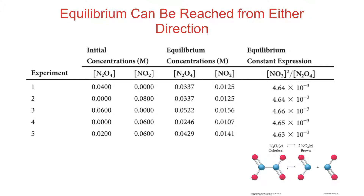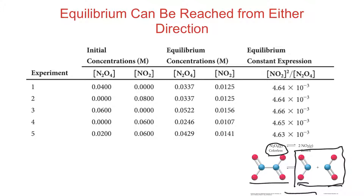For instance, let's say you start with dinitrogen tetroxide, which is colorless. You put it in a vessel and it's going to start breaking apart. If you just have it and nothing else, it'll start breaking apart into nitrogen dioxide gas. If it's in a closed vessel so all of the product stays mixed with the reactants, then as soon as there's enough of the products, they're going to start reacting together and re-forming the reactant.